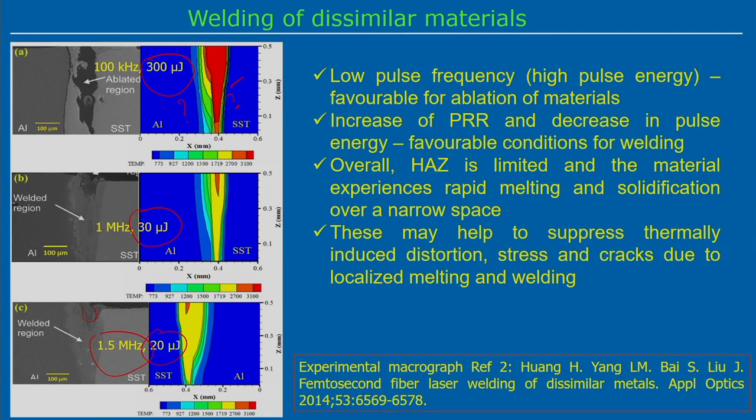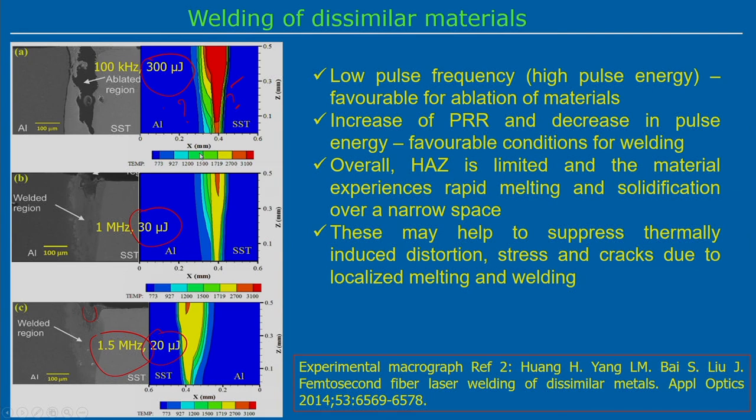The limited heat affected zone may help suppress thermally induced distortion, stress, and cracks due to localized melting. For dissimilar materials, an advantage is very rapid solidification that can reduce intermetallic formation. Dissimilar materials can thus be joined using ultra-short pulse laser. The material thickness in this case is only 0.5 mm, and practically a geometric groove may be required for the ultra-short pulse laser to penetrate through the full thickness direction.